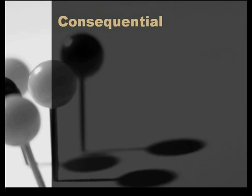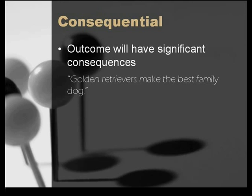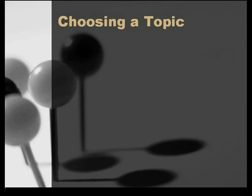Finally, although a topic may be debatable with solid, plausible reasoning, the outcome must be of consequence. For example, the topic 'golden retrievers make the best family dog' is certainly debatable and the arguments on both sides are strong — disposition, faithfulness, intelligence, etc. But in the end, after the debate is over, the consequences are not significant. With that information as background, let's walk through the three main steps in choosing and refining a research paper topic.